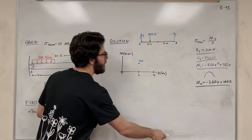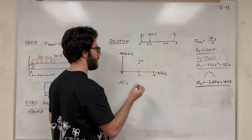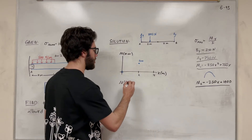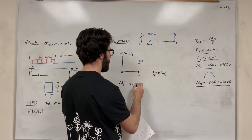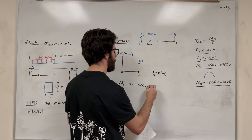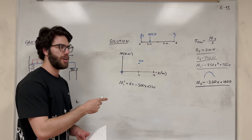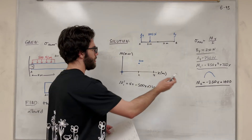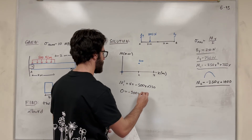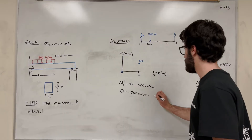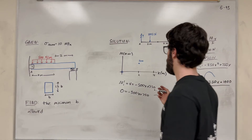Thinking back to calculus, we find the local max by taking the derivative and setting it to zero. The derivative of M1, which also gives us the shear, is M1' = -500X + 750. Setting that equal to zero and solving for X gives X = 1.5 meters — that's where the local maximum occurs.